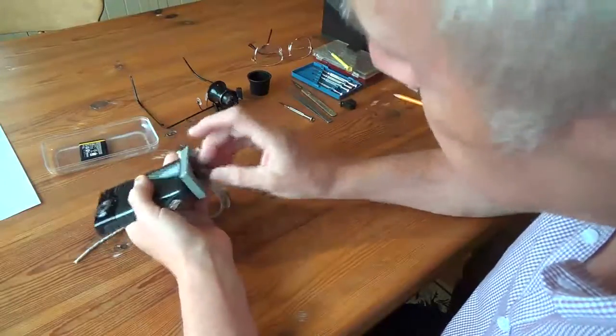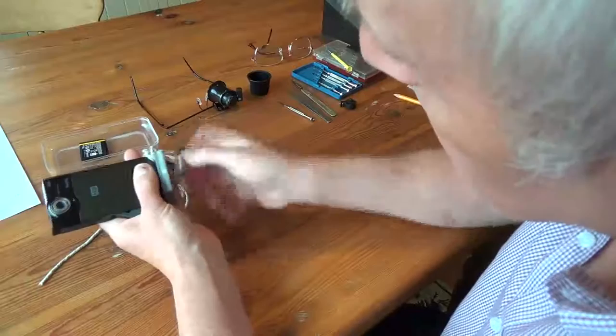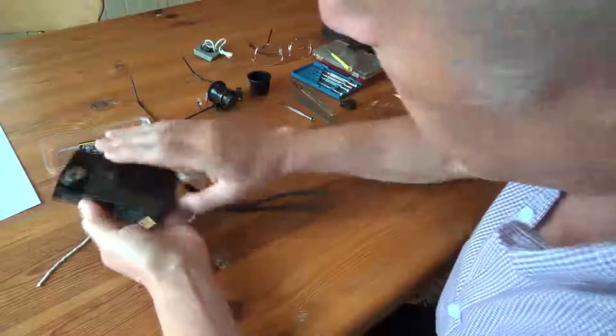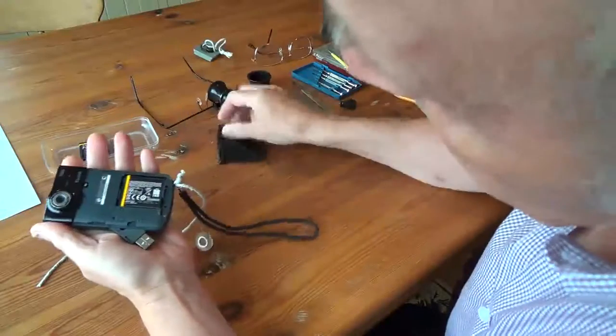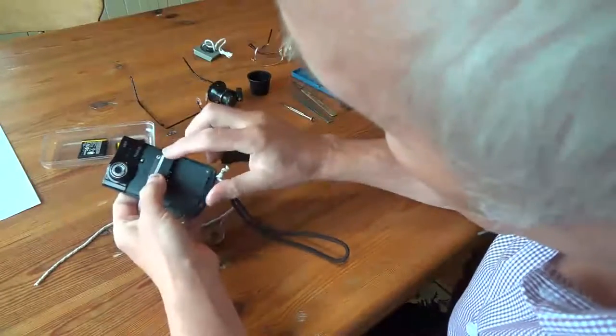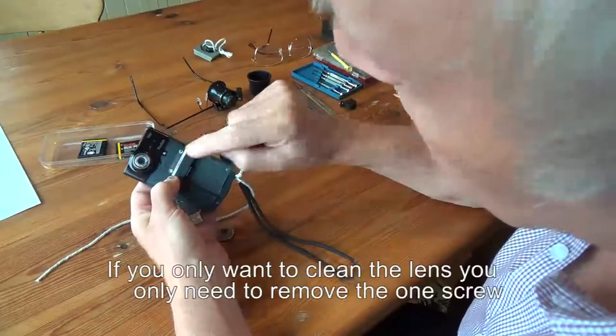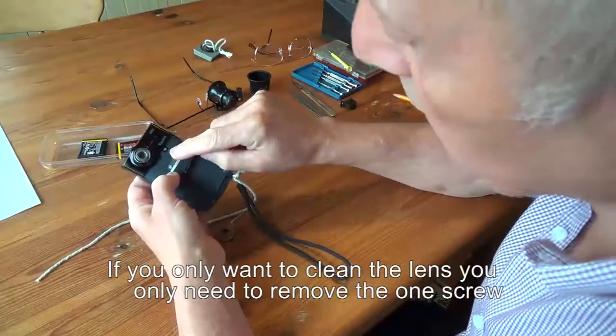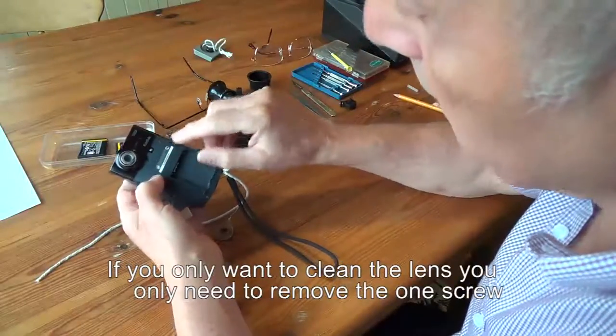Anyway, what you do is open up the camera in the normal way, take the battery out. Then to get to the lens you remove this screw. Now a word of warning, the screws are all different lengths.